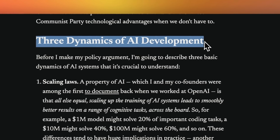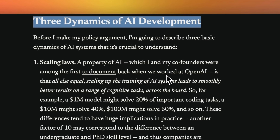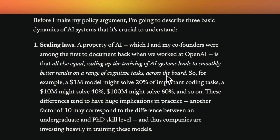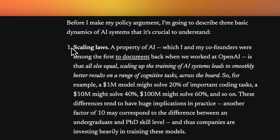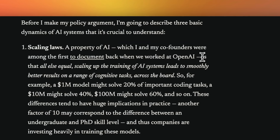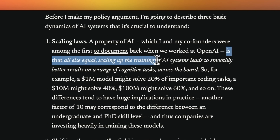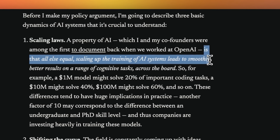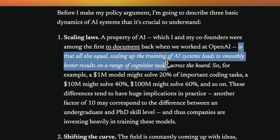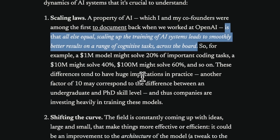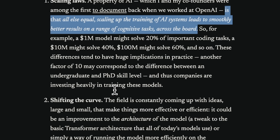He talks about three dynamics of AI development, which I highly recommend everybody read because it really puts things in perspective. The first thing he mentioned was scaling laws — basically, all things equal, scaling up the training of an AI system leads to smoothly better results on a range of cognitive tasks. The idea is that if you use more compute and train these models longer with high-quality data, you will be able to improve or increase their intelligence. And that's why you've probably seen these high valuations and huge raises of billions of dollars.